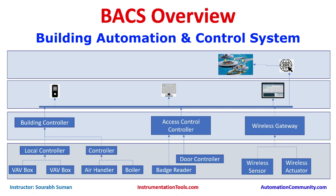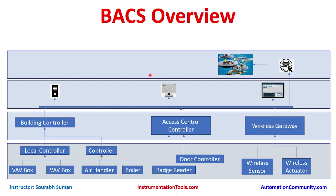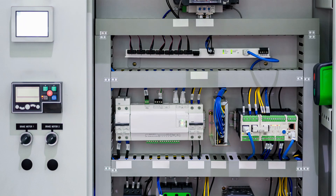Hello and welcome. In this lecture we are covering BACS — Building Automation Systems, or Building Automation and Control Systems. These are a type of OT system and they are commonly used in buildings for heating, ventilation, and air conditioning, or HVAC in short.